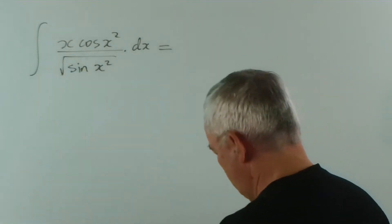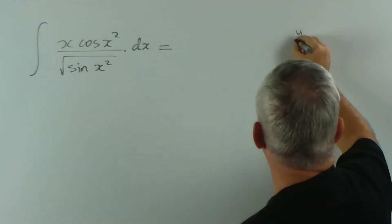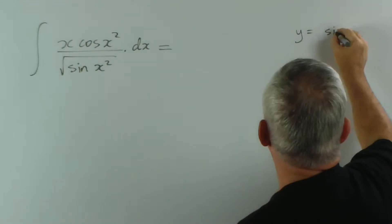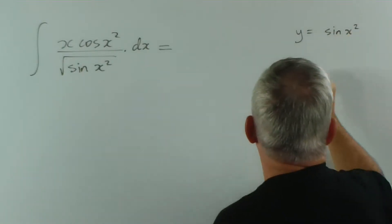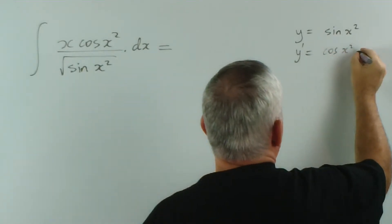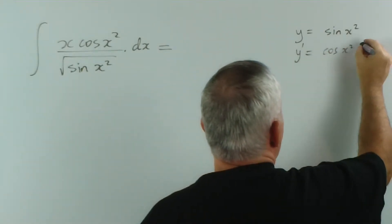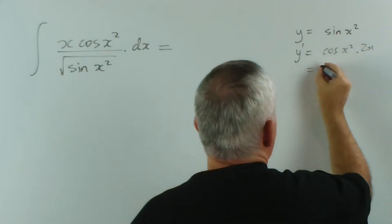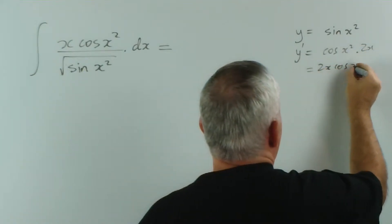What's the derivative of sin x squared? Well, you can do this on the side of your page. y equals sin x squared. So the derivative would be... the derivative of sin is cos x squared times the derivative of x squared is 2x. So this would be 2x cos x squared.